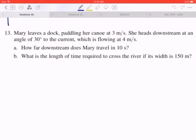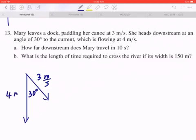In the first part, it says that the canoe is moving at 3 meters per second, and it makes an angle of 30 degrees with respect to the current. This is going to be 30 degrees, the current is moving at 4 meters per second. Now, in part A, they're asking you to find how far downstream does Mary travel in 10 seconds.